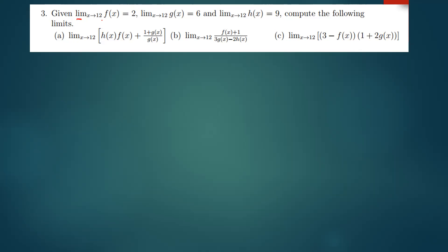We've been given the limit of f(x) as x approaches 12, which is 2. The limit of g(x) as x approaches 12 is 6, and the limit of h(x) as x approaches 12 is 9. The question asks us to compute the following limits.